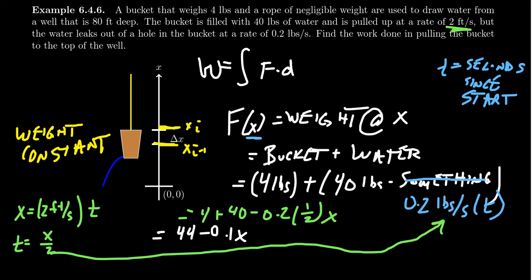And this will give us the force, the weight of the bucket at any location. So when you're at location 0, this thing will weigh 44 pounds. When we're at location, say, 1, it will be 44 minus 0.1, so 43.9. Then if you do the very top of this thing, it's 80 feet tall, we could take 44 minus 0.1 times 80.